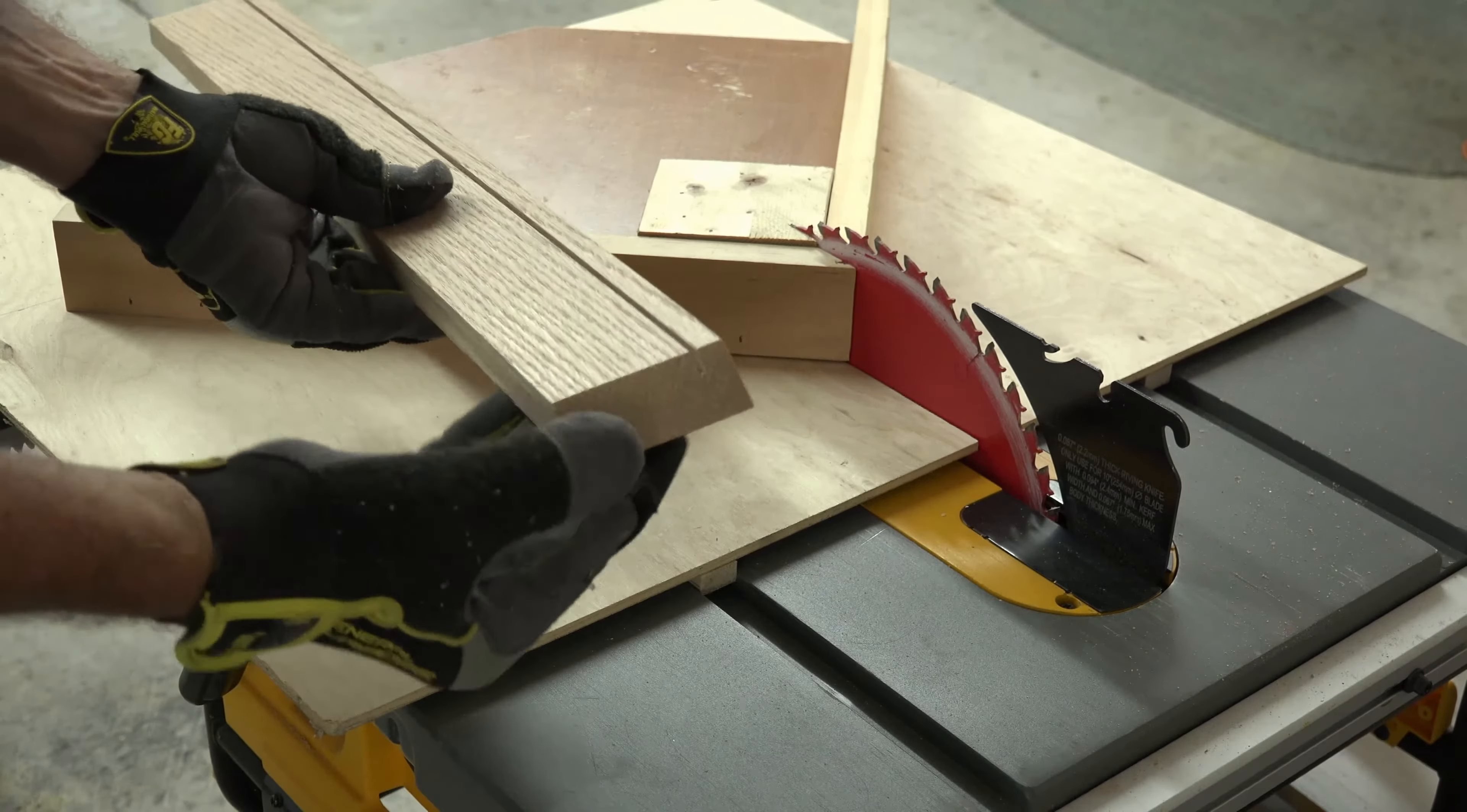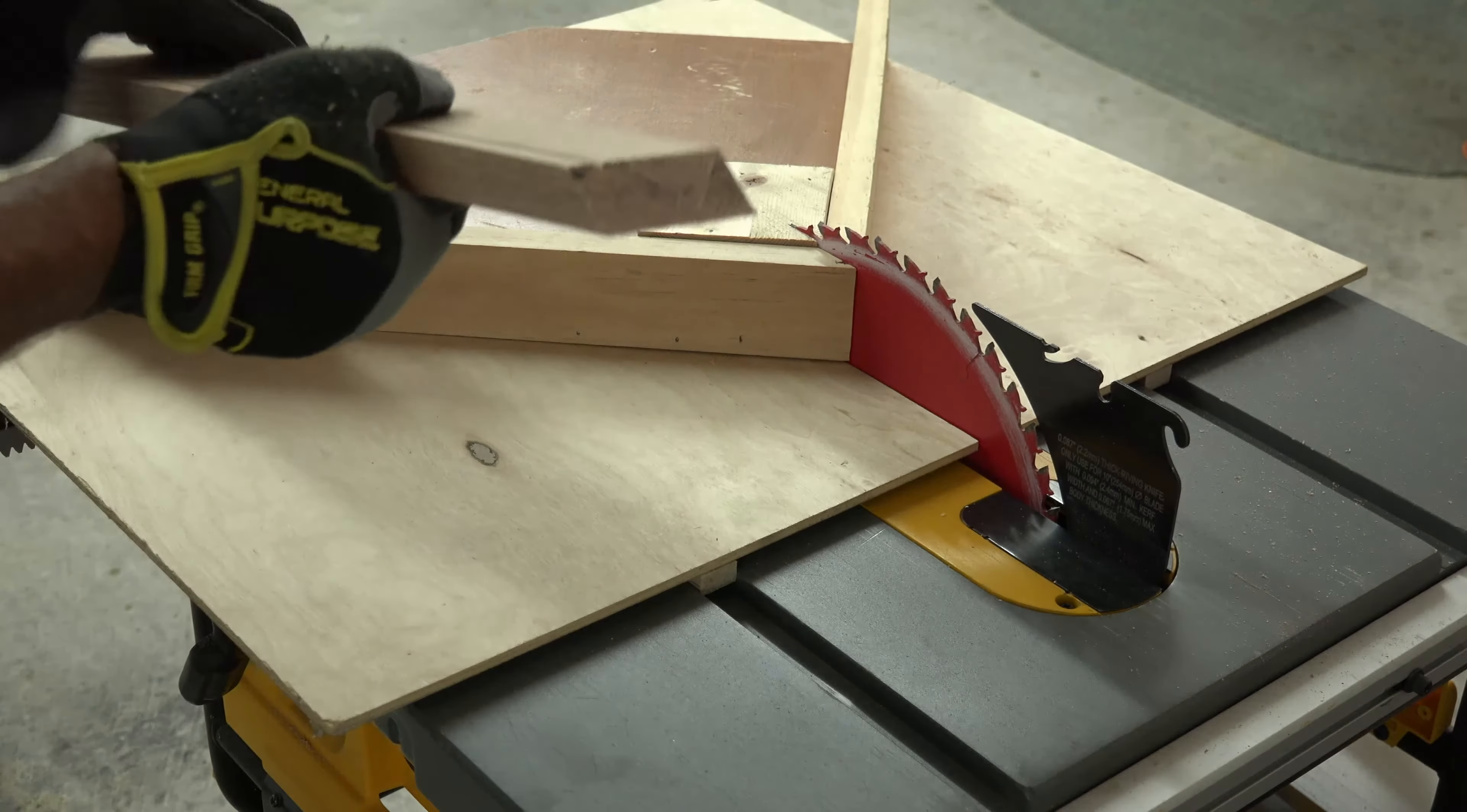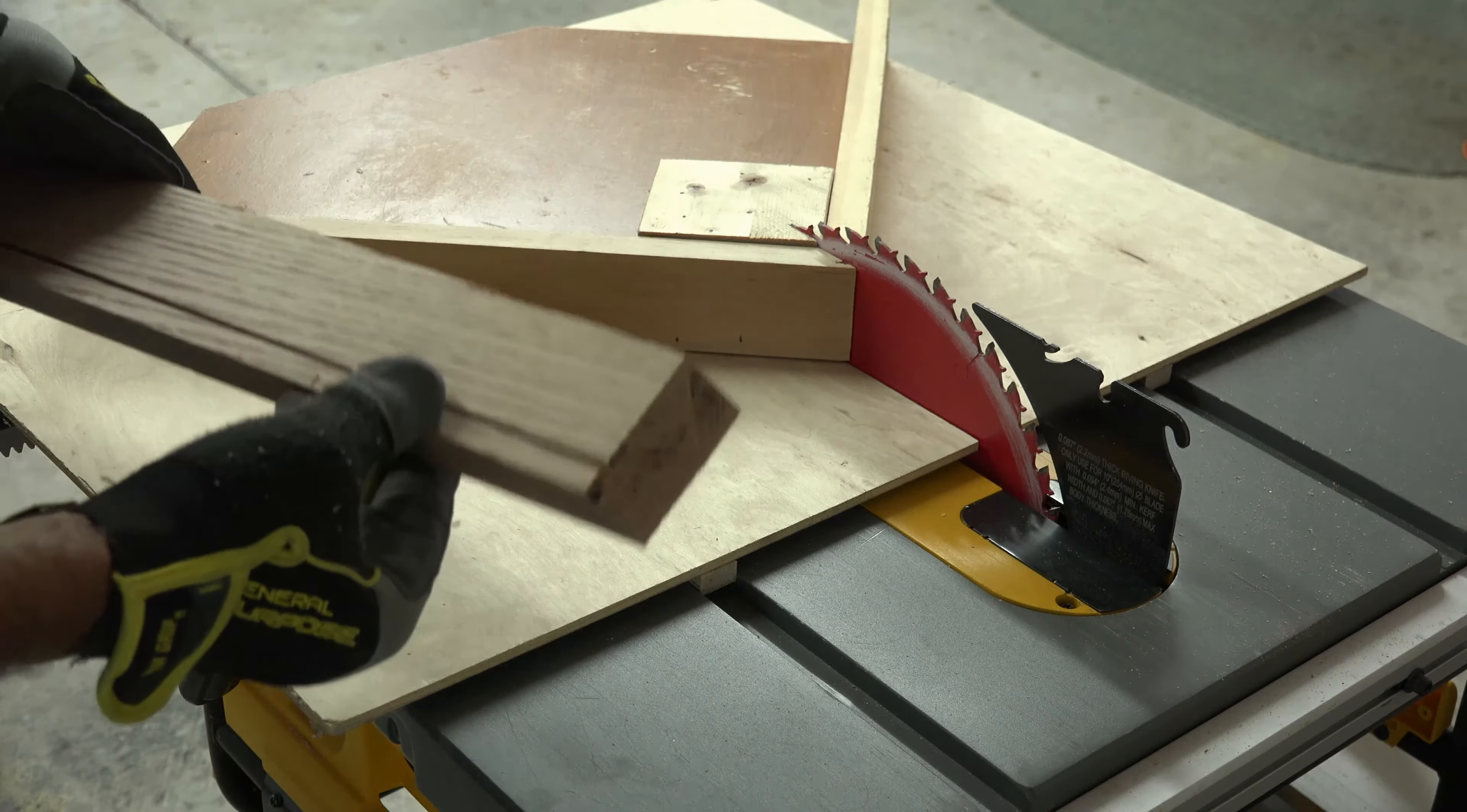Now you might have noticed the burn marks on one of the ends of my cuts. This is a sign that your wood shifted a little during your cut and was rubbing against the face of the saw blade. This must be corrected. You will not have a perfect fit at your joints.